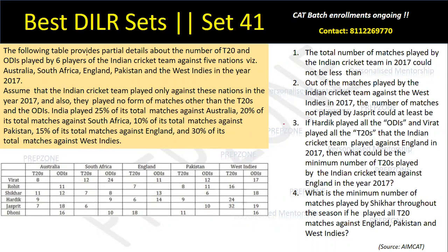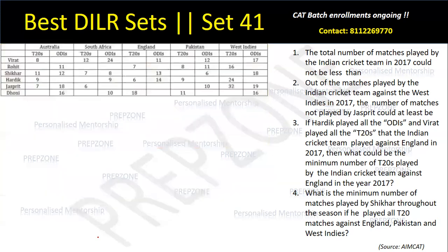The following table provides partial details about the number of T20s and ODIs played by six players of the Indian cricket team against five nations — Australia, South Africa, England, Pakistan, and West Indies — in the year 2017. We have six Indian players and their scores in both ODI and T20 formats. The Indian cricket team played only against these nations in 2017 and played no format other than T20 and ODIs. India played 25% of total matches against Australia, and so on.